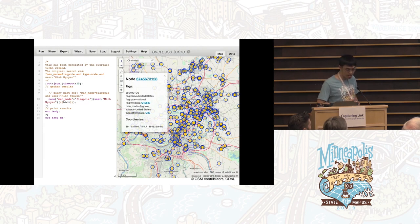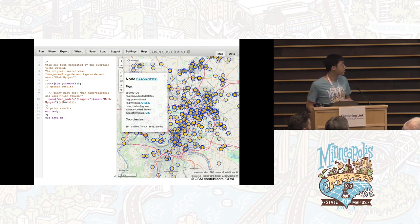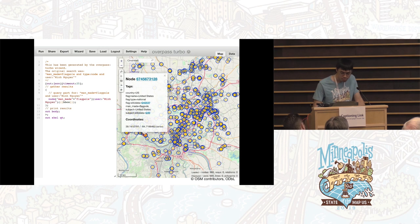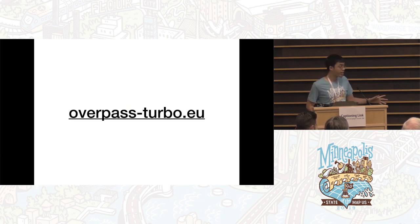Overpass Turbo makes it a lot easier to create an Overpass query and make use of the results. By default, it shows results on an interactive map, and clicking a feature inspects all its tags. This is actually the way I always like to have it open while mapping. Here's the URL for Overpass Turbo — please make sure to check it out after the talk: overpassturbo.eu.